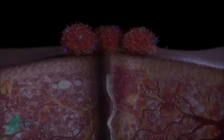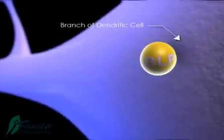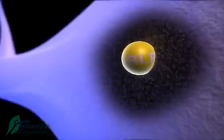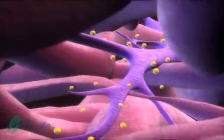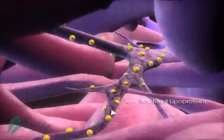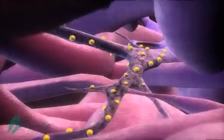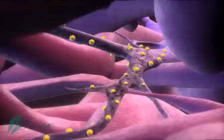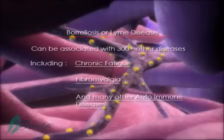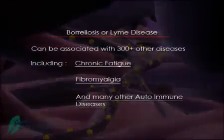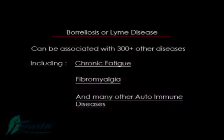As the spirochete is continuously moving, it's releasing the BLPs, the bacterial lipoproteins, which are impairing the immune system and causing inflammation, irritation, and damage to the peripheral and central nervous system. The number of cases of Lyme disease reported to the CDC do not represent the total number of cases that exist. Lyme disease, its co-infections, and secondary infections may represent more than 300 different medical conditions, such as chronic fatigue, fibromyalgia, and other autoimmune diseases.